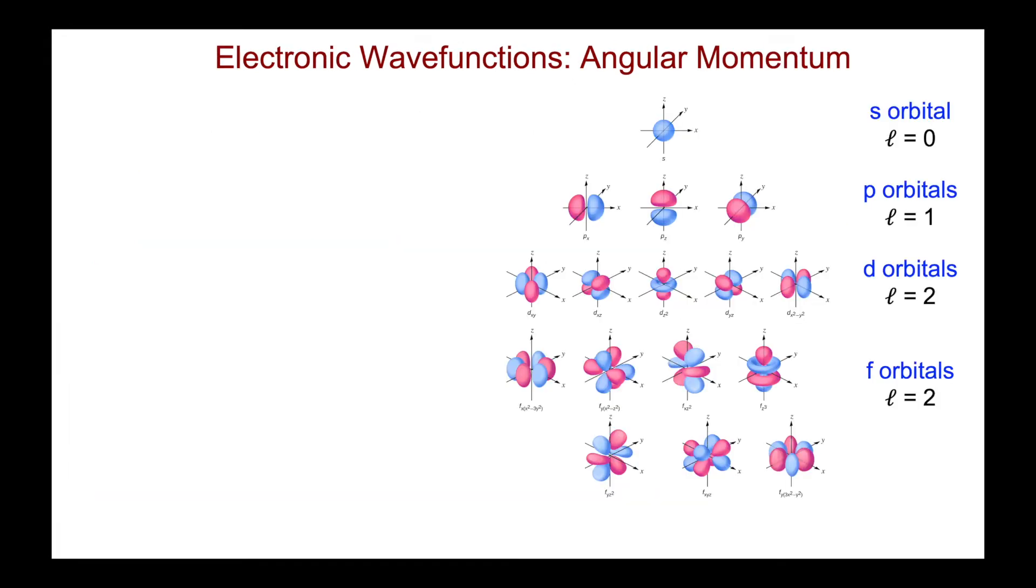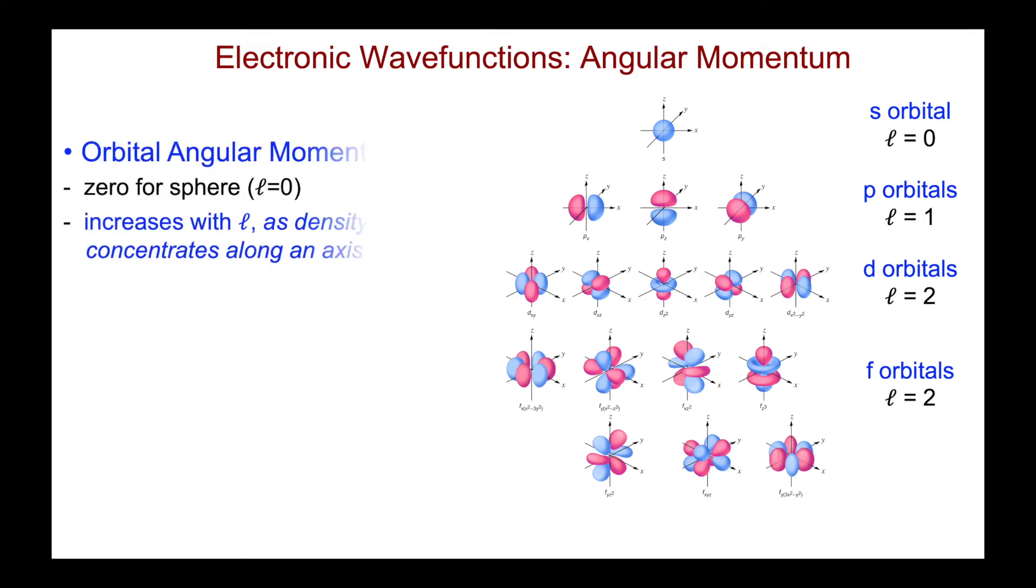Let's just briefly talk about the angular momentum of the orbitals. The orbital angular momentum, uppercase L, is zero for a sphere. There is no directionality. However, it increases as l increases.